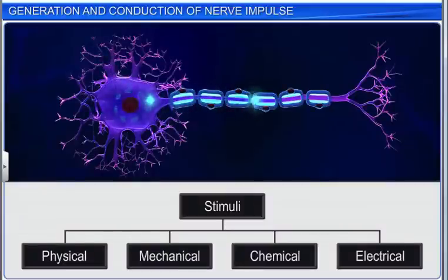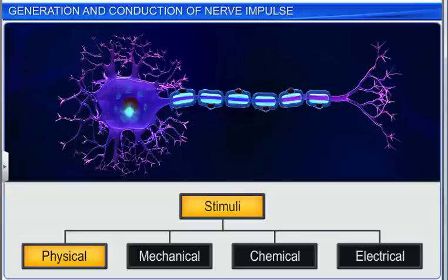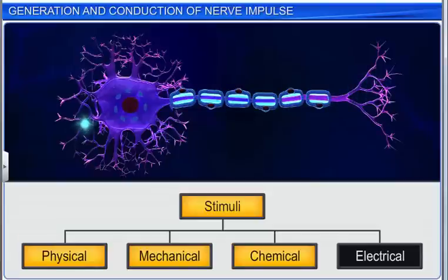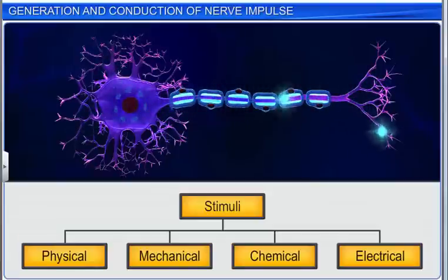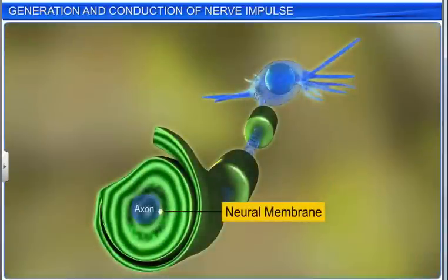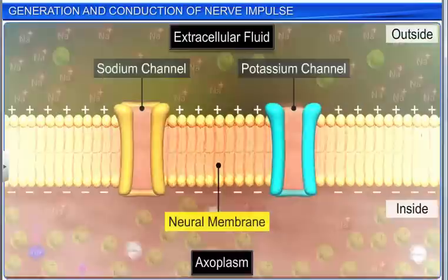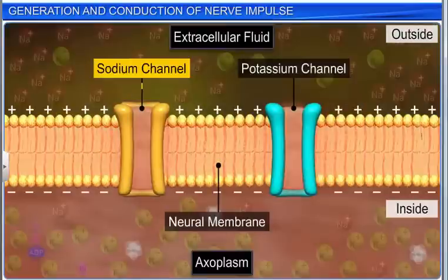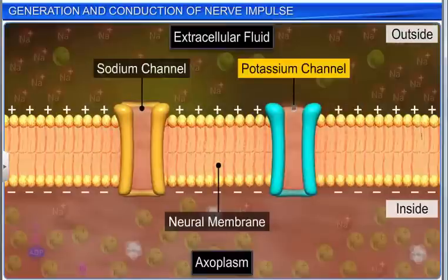Neurons are excitable cells. They may be stimulated by physical, mechanical, chemical, or electrical stimuli. The nerve fiber or axon is covered by a neural, axonal, or plasma membrane. The neural membrane has sodium and potassium ion channels called voltage-gated or regulated channels.